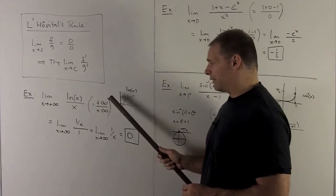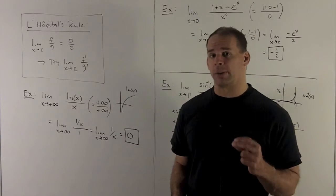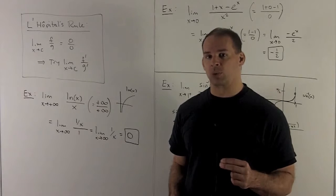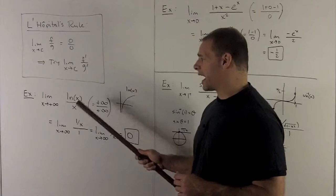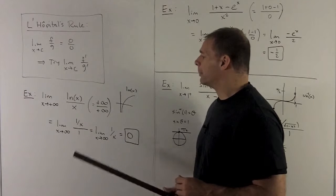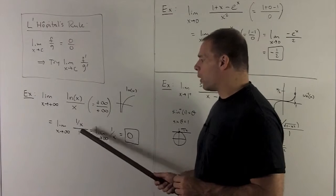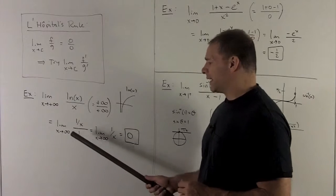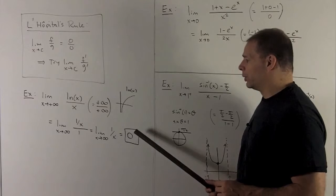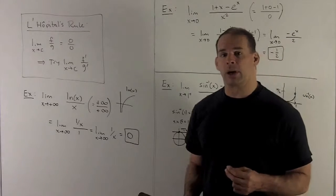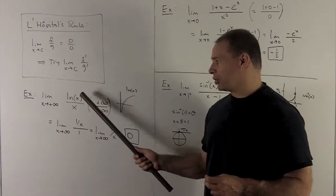So we're going to have infinity over infinity, which is one of our indeterminate forms. So L'Hôpital's rule will apply. Take the derivative of the top over the derivative of the bottom. We get 1 over x over 1, which just turns to 1 over x. If I take the limit as we go to infinity, limit of 1 over x goes to 0. I have a number, so that's going to be my original limit.